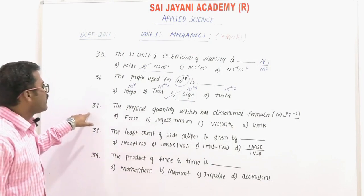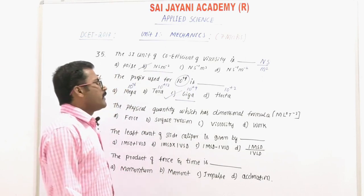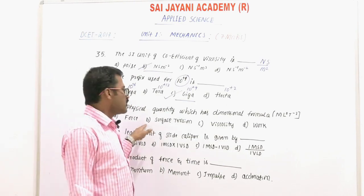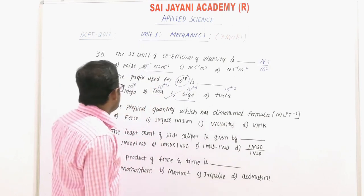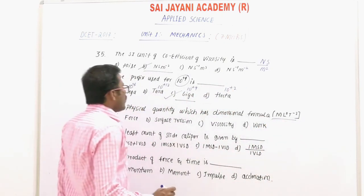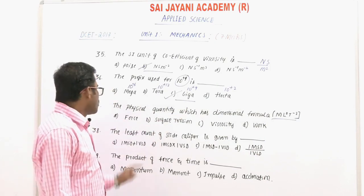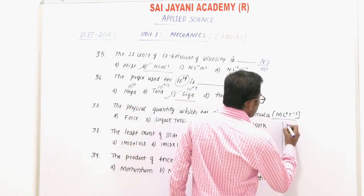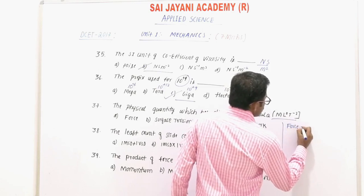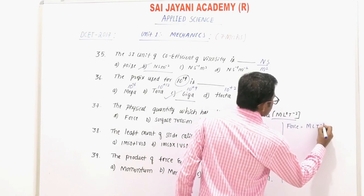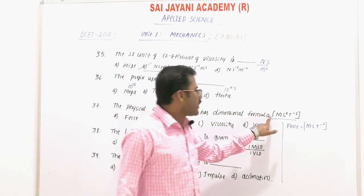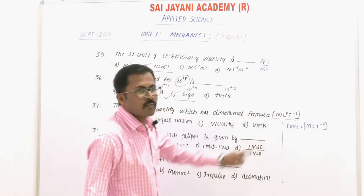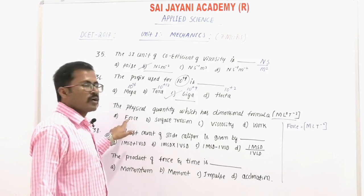Question number 37: the physical quantity which has the dimensional formula M·L⁰·T⁻² is — option A: force, option B: surface tension, option C: viscosity, option D: work. For force, the dimensional formula is M·L·T⁻², which includes L¹, not L⁰. So the given formula does not apply to force.